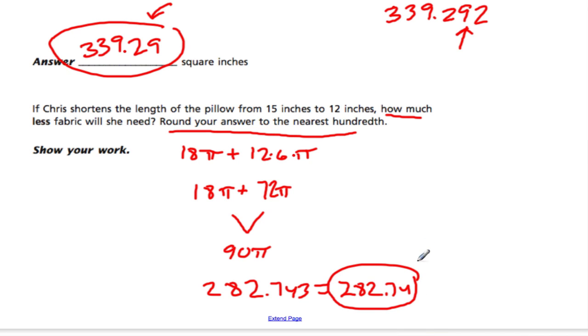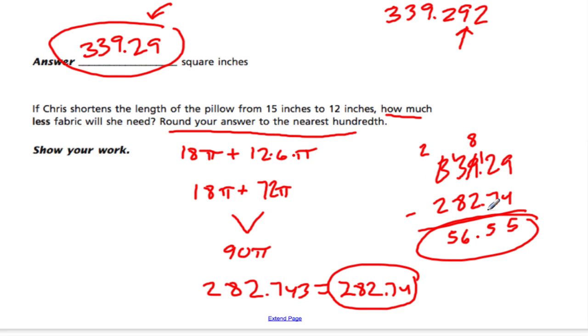So now we have these two numbers, and we would take 339.29, subtract 282.74 from it. And we can go right across. 9 minus 4 is 5. We can't do 2 minus 7, so we'll borrow one value from here. And now 12 minus 7 is 5. And then 8 minus 2 is 6. We'll borrow one of the hundreds here. So we have 13 tens minus 8 tens is 5. And then 2 minus 2, and the answer is 56.55.